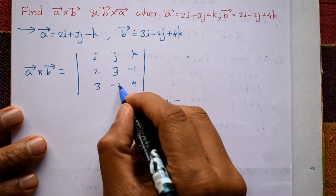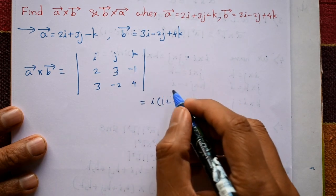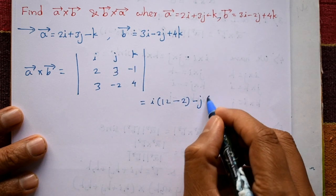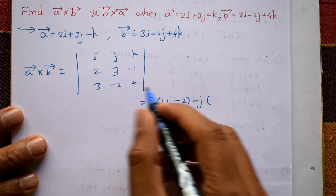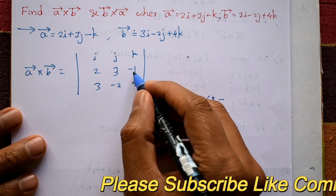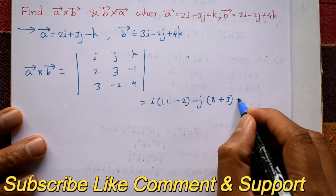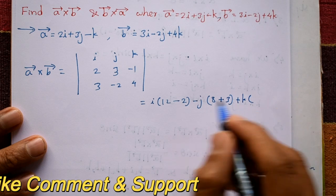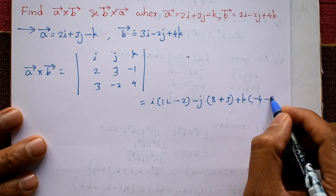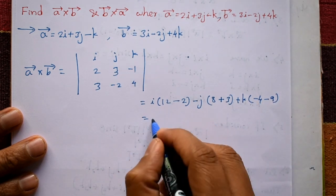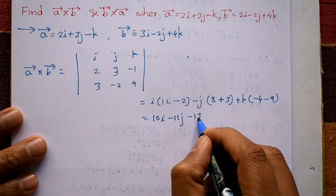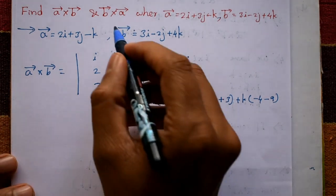Expanding: i into (minus 2 into 4 minus minus 1 into minus 2) gives i(−8 − 2) = 10i. Then minus j into (2 into 4 minus 3 into minus 1) gives minus j(8 plus 3) = minus 11j. Then k into (2 into minus 2 minus 3 into 3) gives k(minus 4 minus 9) = minus 13k. So a cross b equals 10i minus 11j minus 13k.